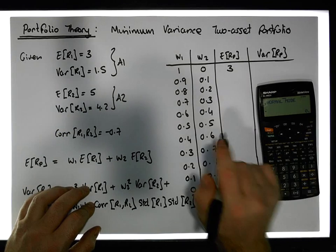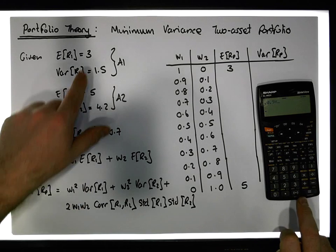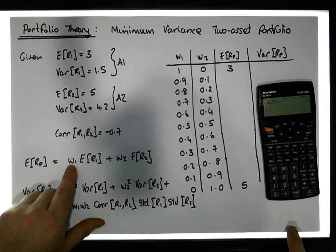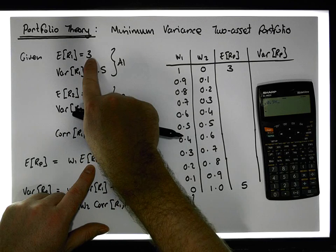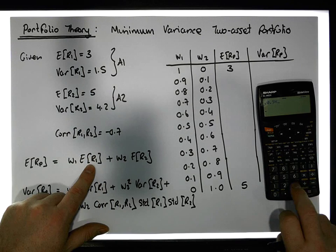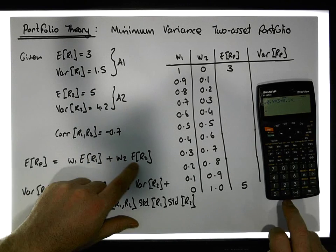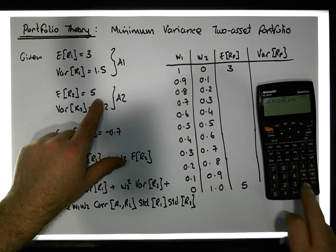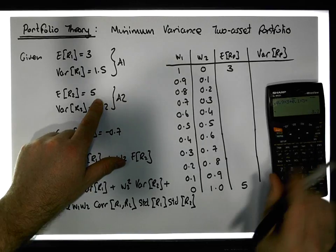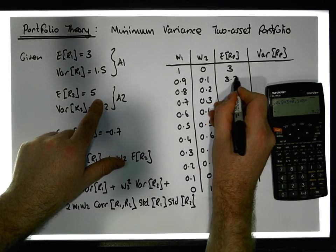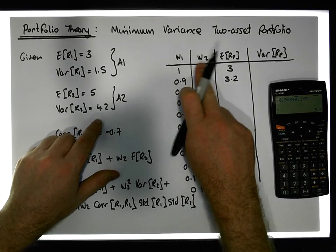Moving along, for a 90/10 mix we have 0.9 times the expected return of asset one, which is 3, plus 0.1 times the expected return of asset two, which is 5. That gives us a return of 3.2 — so we'd expect a return of 3.2% with a 90/10 mix between asset one and asset two.